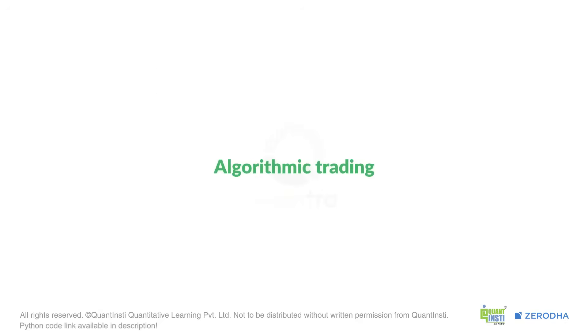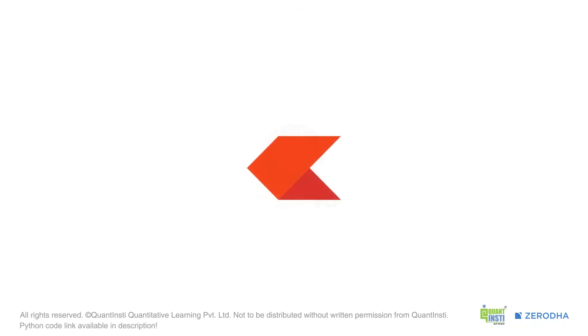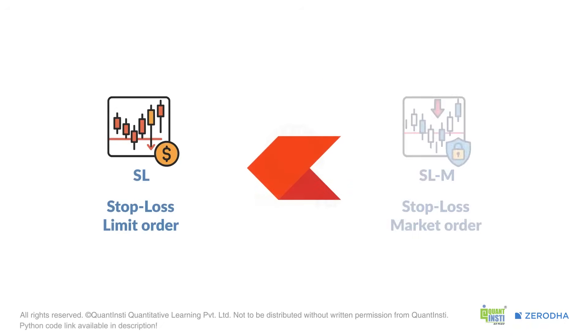In algorithmic trading, we don't do this manually. We program the system to do it for us. Zerodha gives us two ways to do this: SL and SLM.